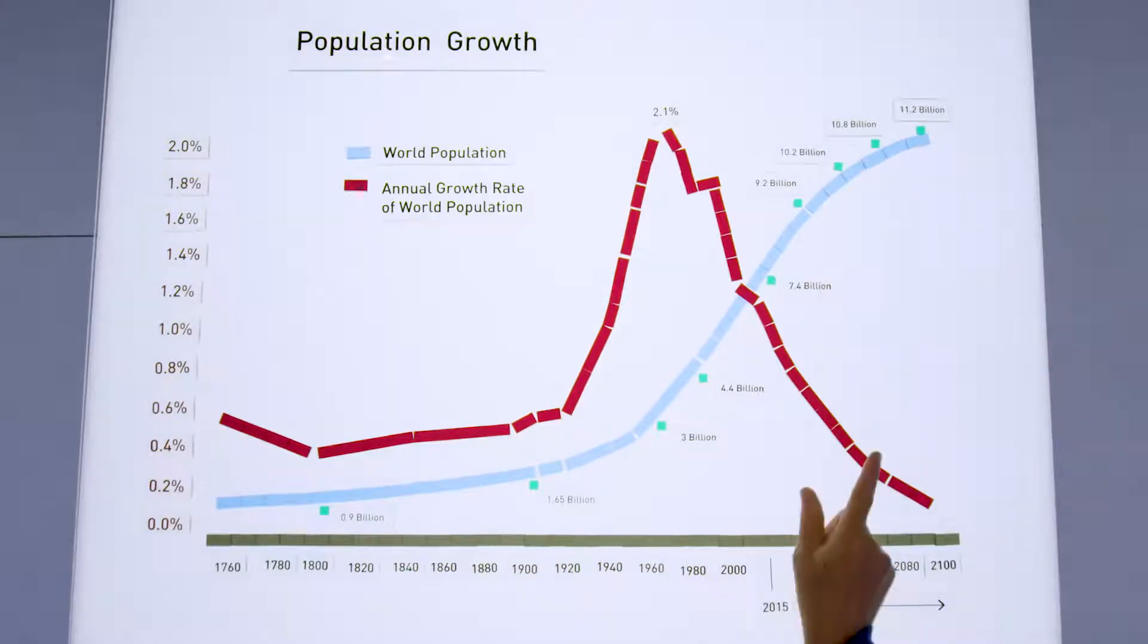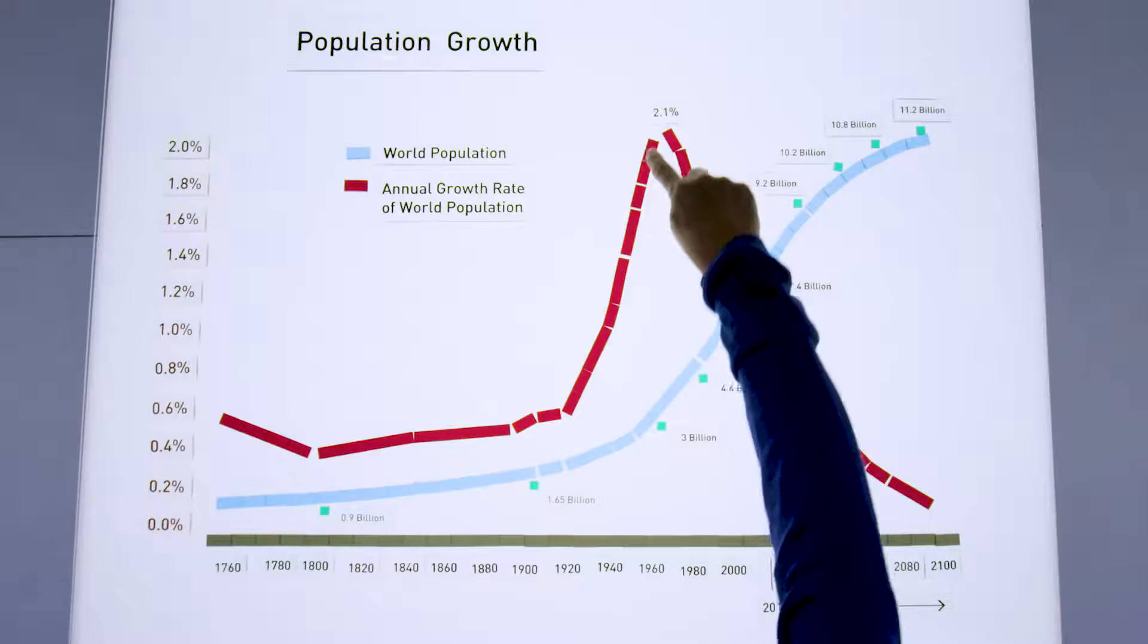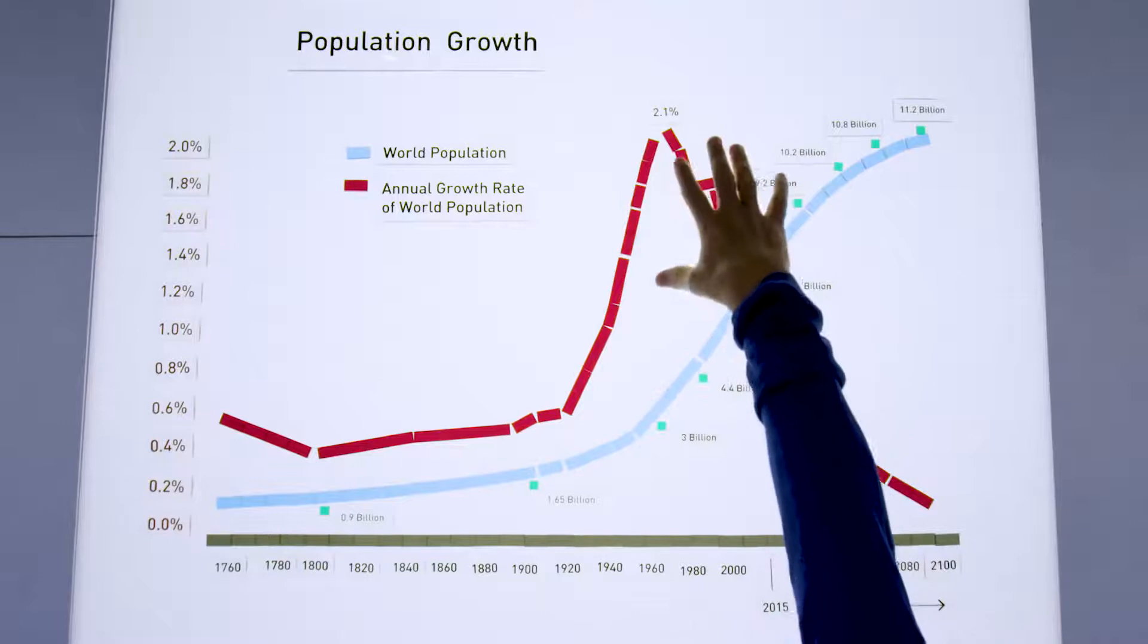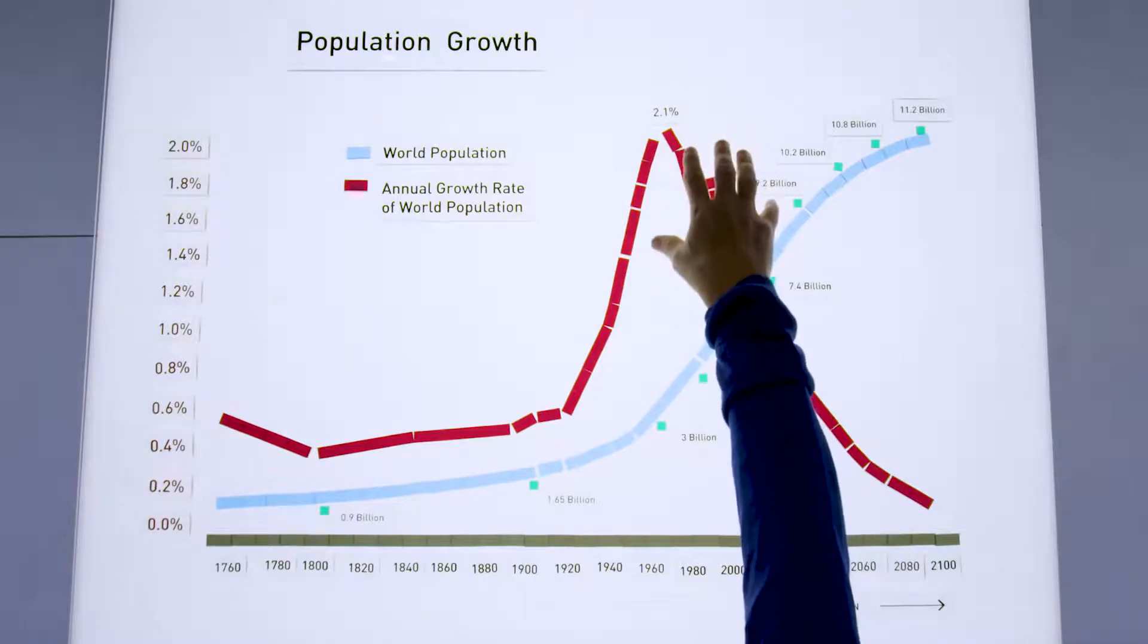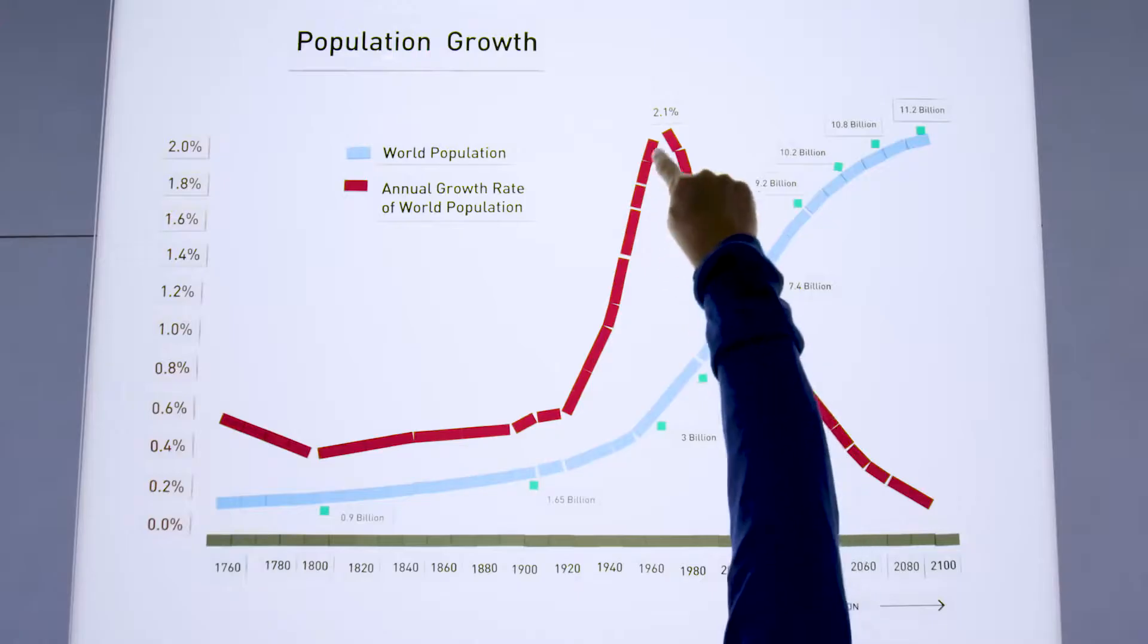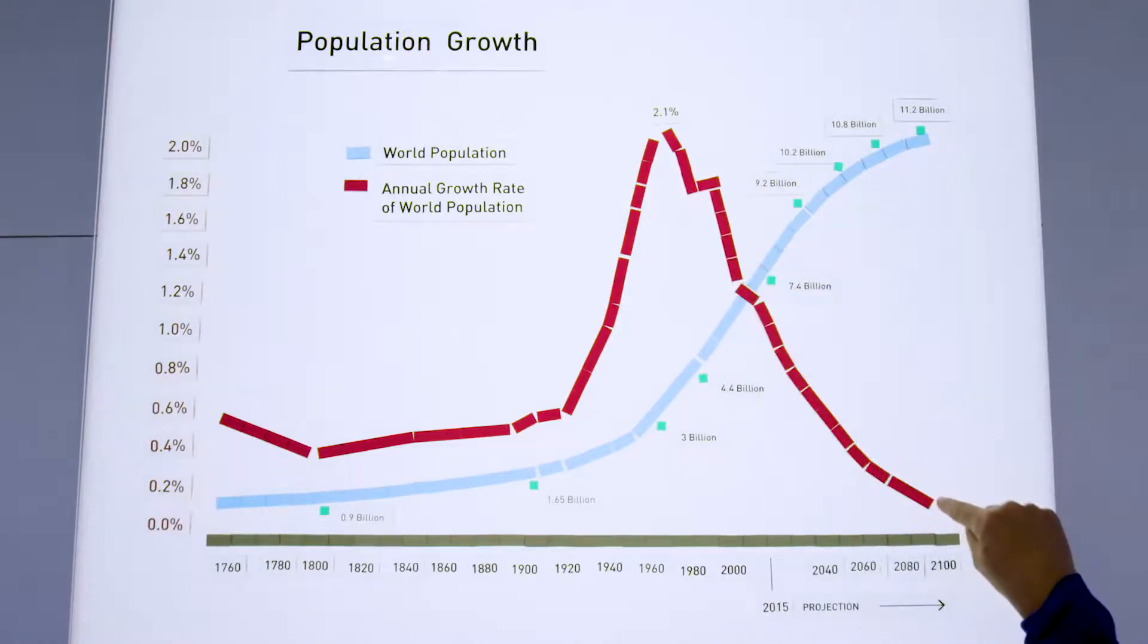Another way to see that is through this rate of population growth. And you can see that in the 60s, that reached a pretty high number, over 2% per year. And it's now come way down.